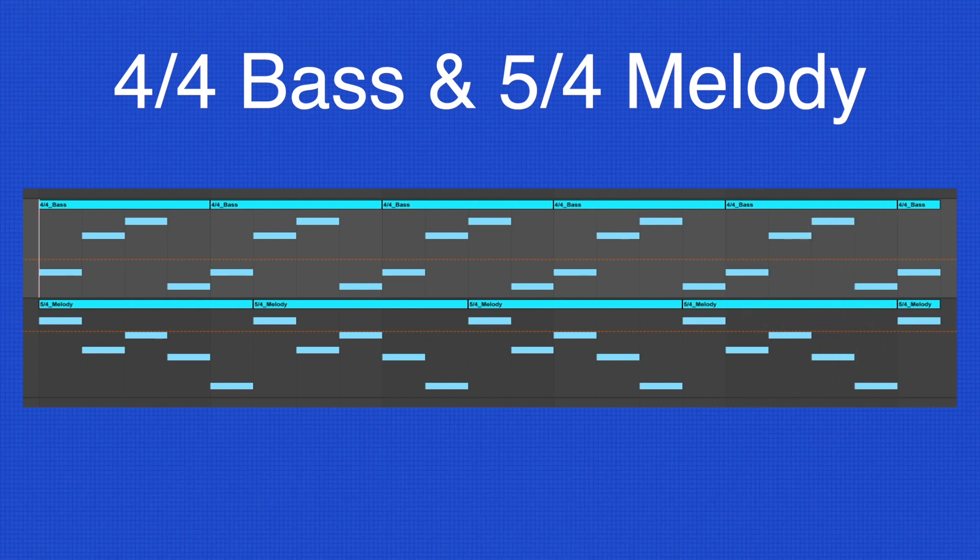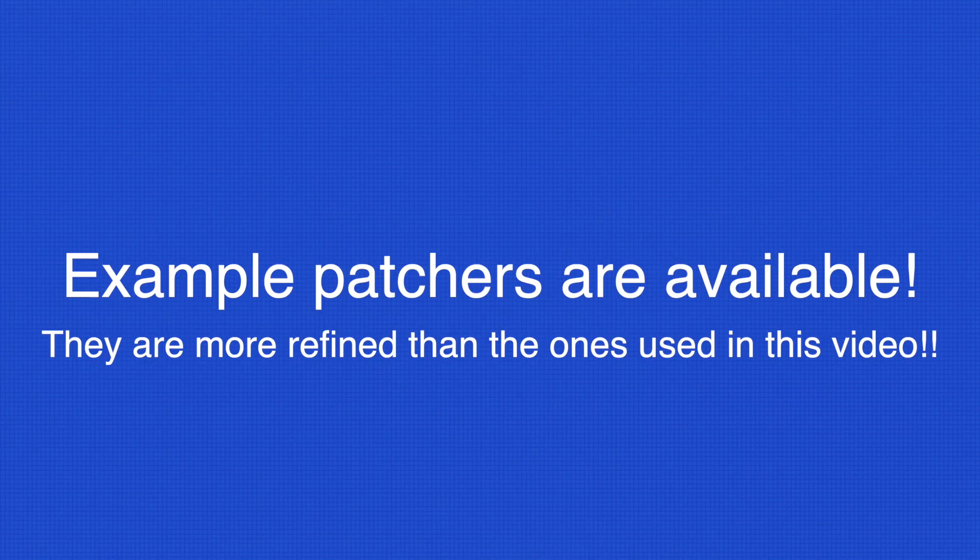But we can easily make it more interesting by having a melody in 5-4. And you can imagine how interesting things will get once we use polymeter in generative music. So that'll be for the second half of this video. You can download the example patchers in the description. Please do watch the video first to understand them so that you can use them and also customize them according to your musical style. Alright, let's get started.